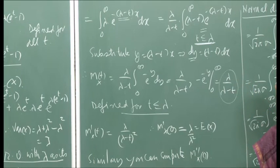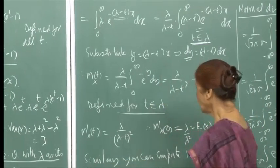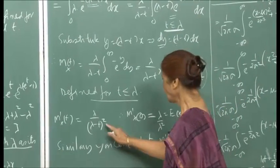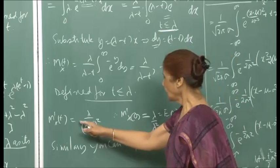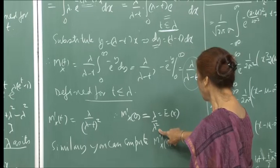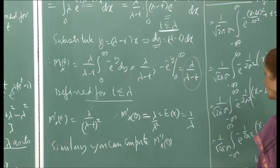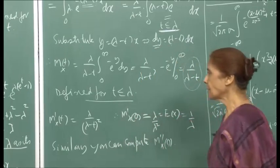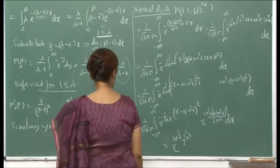The MGF λ/(λ−t) exists for t < λ, not t ≤ λ. By looking at this form you can identify the corresponding random variable as exponential with parameter λ. Differentiating: M'_x(t) = λ/(λ−t)², so M'_x(0) = 1/λ, which is E[x] for the exponential distribution. The name 'moment generating function' is very suggestive — this function generates the different moments of the PDF.